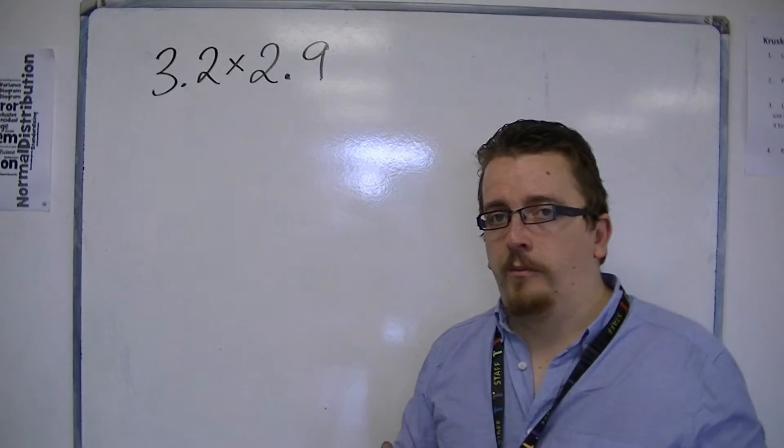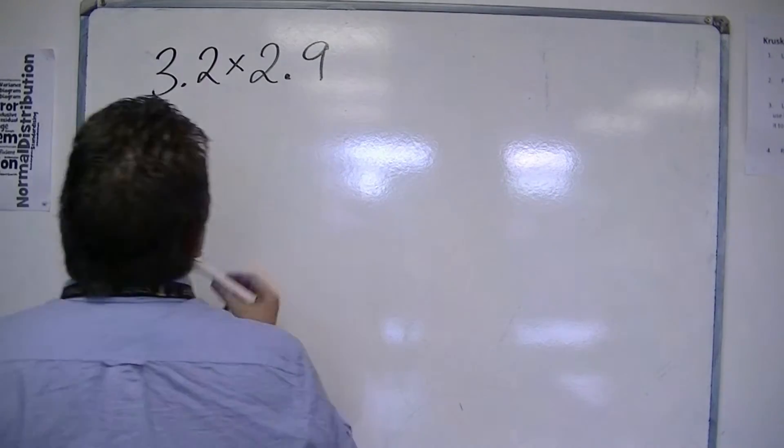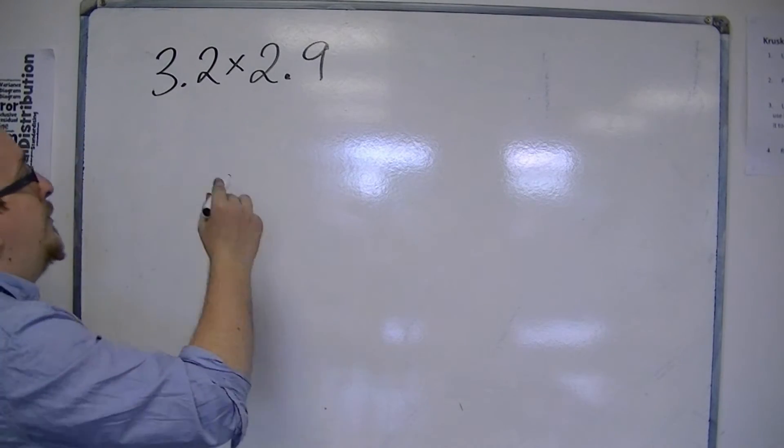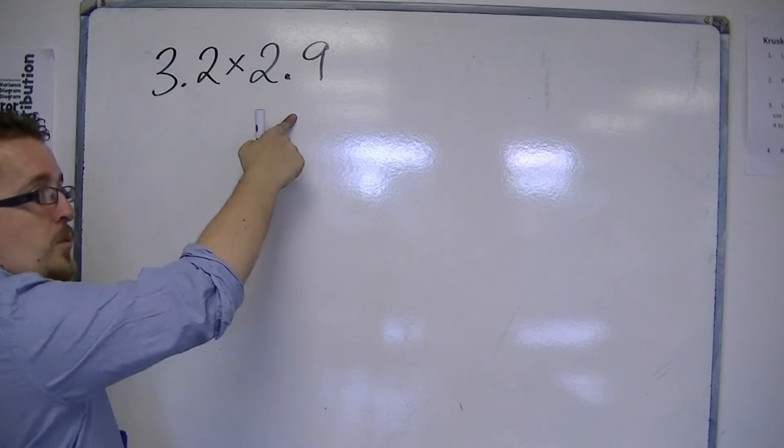When multiplying with decimals, ignore the decimal point. So instead of doing 3.2 times 2.9, look at just 32 times 29.